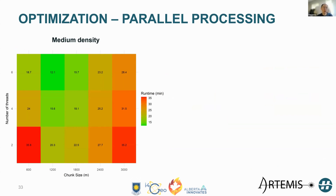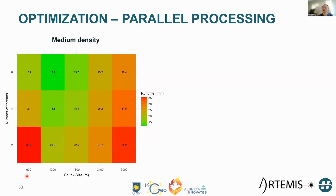From the benchmarking experiments varying both number of workers and chunk size, the best combination for a medium-density dataset is six cores with a chunk size of 1200 meters. For a high-density dataset at about 15 points per square meter, the optimal combination is six cores with a chunk size of around 600 meters — so when point density is much higher, you need to reduce the chunk size accordingly to reach optimal performance.